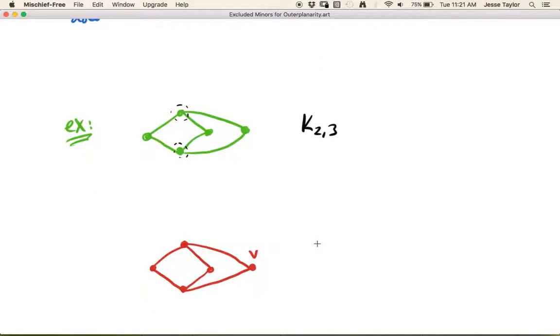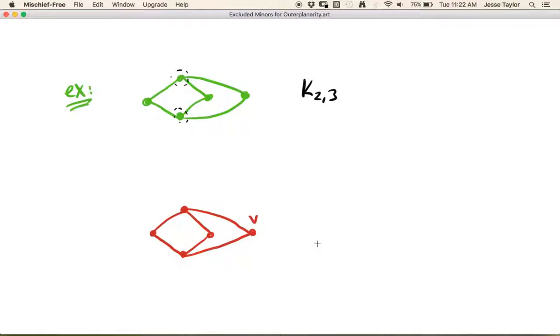Remember our options for minors are we can delete vertices, we can delete edges, and we can contract edges. So we want to exhaustively check all of those types of moves. Let's imagine deleting V in this red graph. Remember, when we delete a vertex, we get rid of the vertex and we also get rid of every edge associated with that vertex. So we get this graph, and is this outer planar? Yes, it is. So this is outer planar.